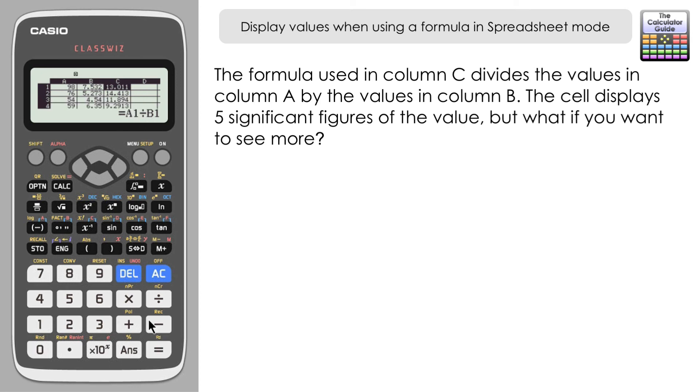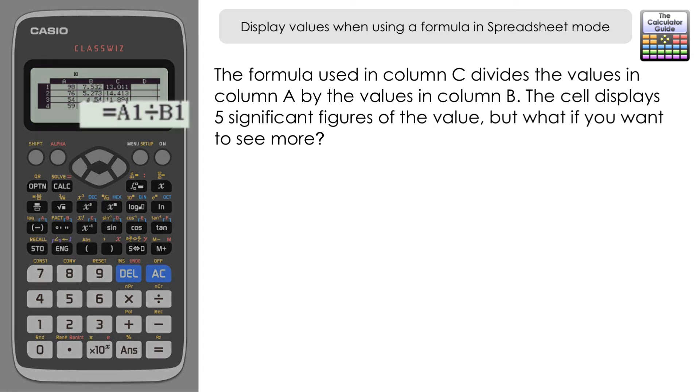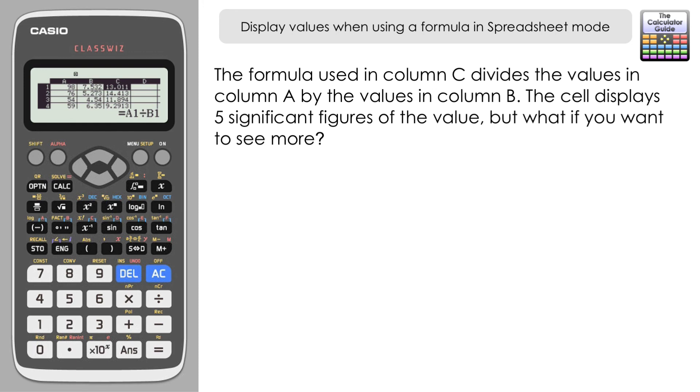So in column C it is showing the result when you divide the figure in column A by the figure in column B on each of the different rows there. Now one thing to notice is that it just displays the values in column C to five significant figures. On the bottom line, the working line that you have there, it displays the formula that we've used so A1 divided by B1, row 2 it would be A2 divided by B2 and so on. Now five significant figures may be sufficient for what you need, but what if you wanted to see the full calculator display?